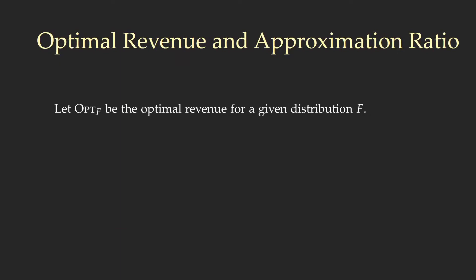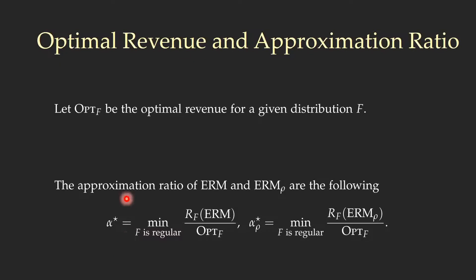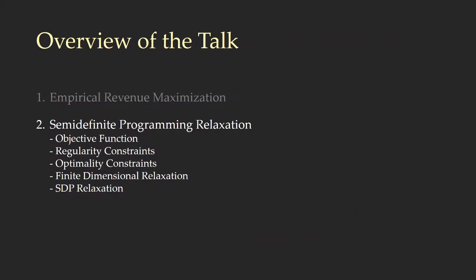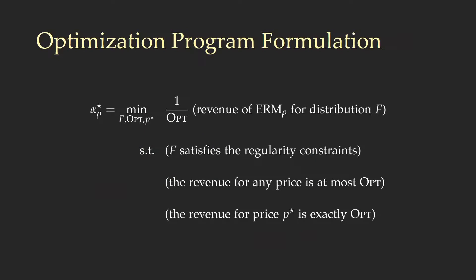Let opt(F) be the optimal revenue for some given distribution F. We define the approximation ratio alpha-star of ERM to be the minimum possible ratio between the revenue that ERM achieves and the optimal possible revenue, where the minimum is taken over all regular distributions. Similarly, we define alpha-star_rho as the approximation ratio of the rounded ERM. Our goal is to find bounds on alpha-star and alpha-star_rho.